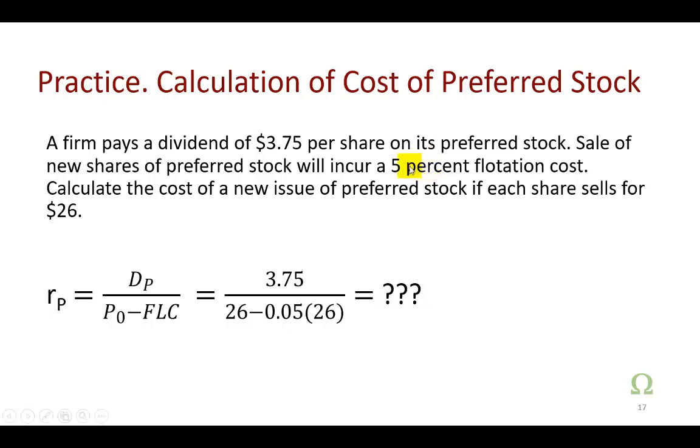Here's a little homework for you. This firm pays dividend of $3.75 per share on its preferred stock. The sale of new shares will incur a 5% flotation cost, and we believe the firm can sell each share for $26.